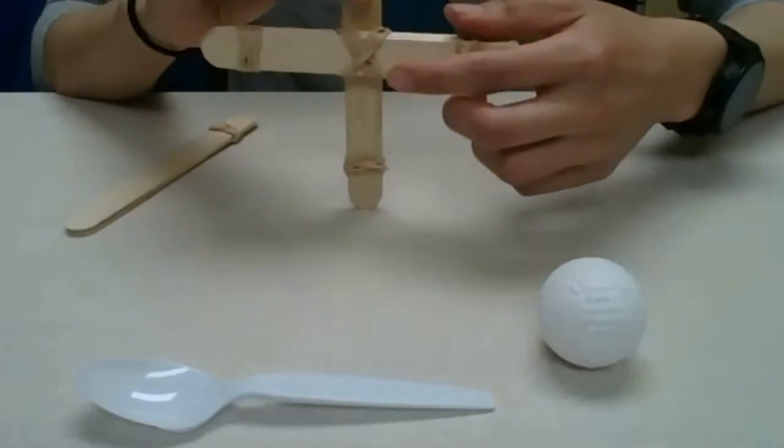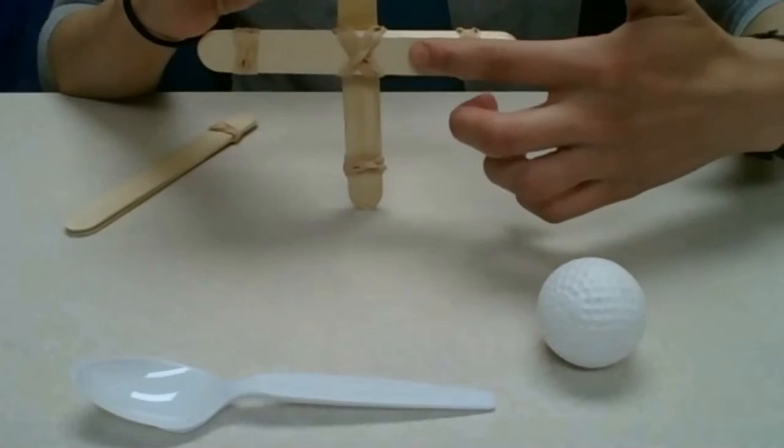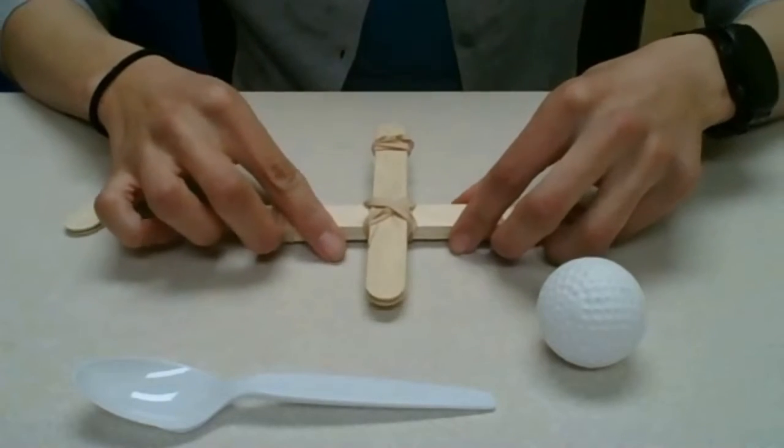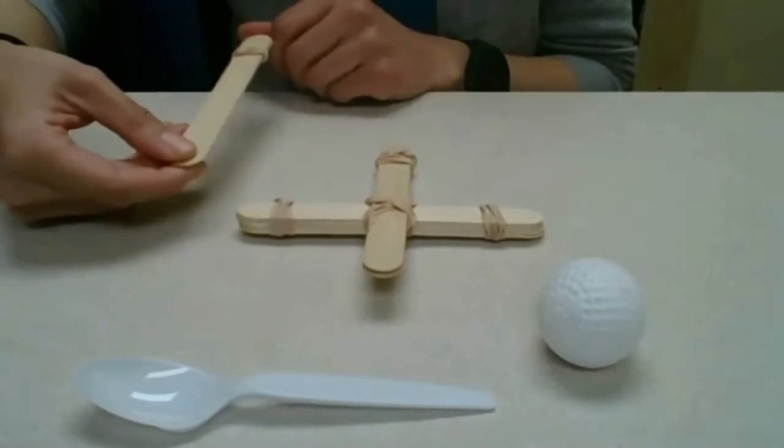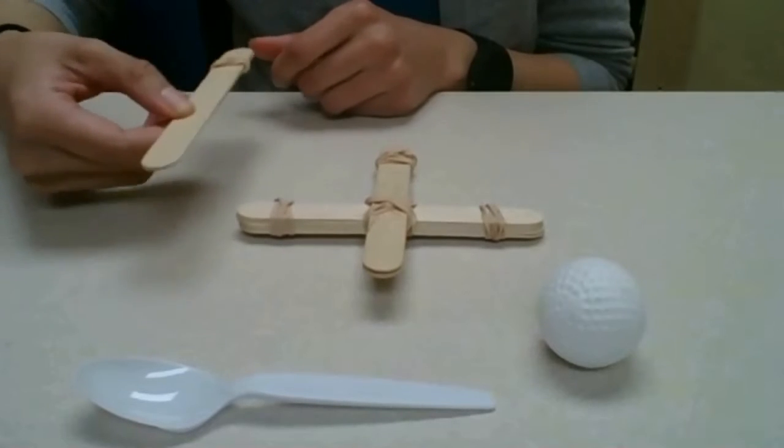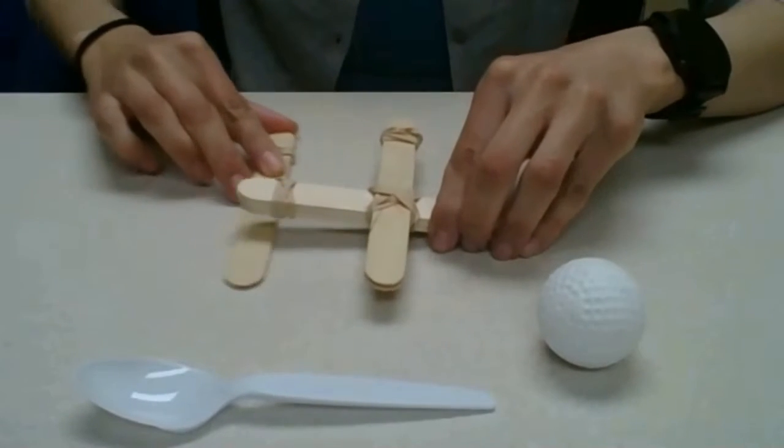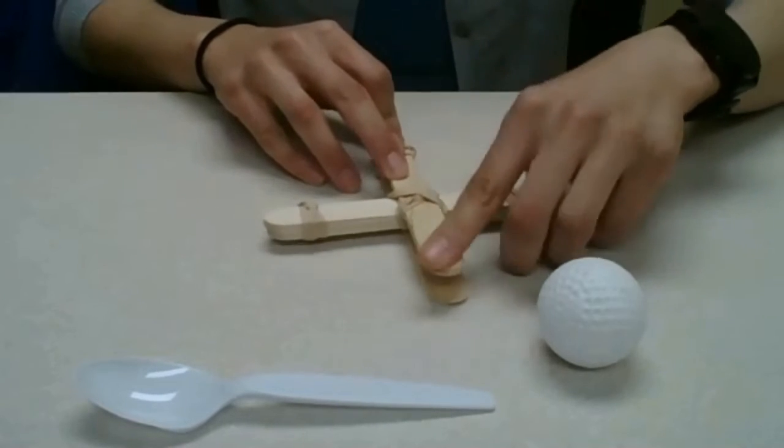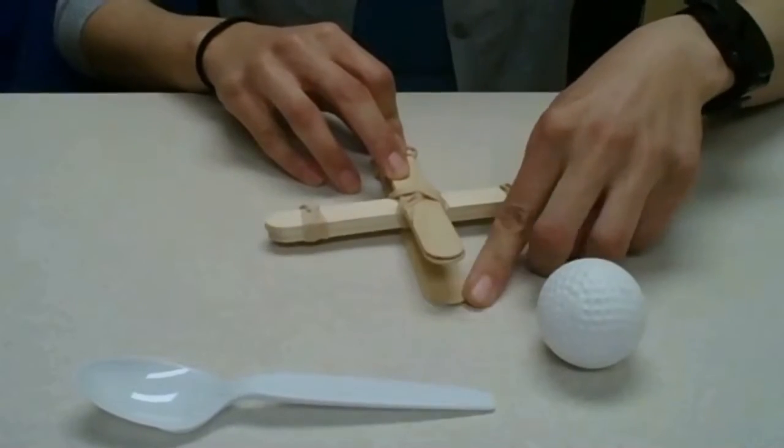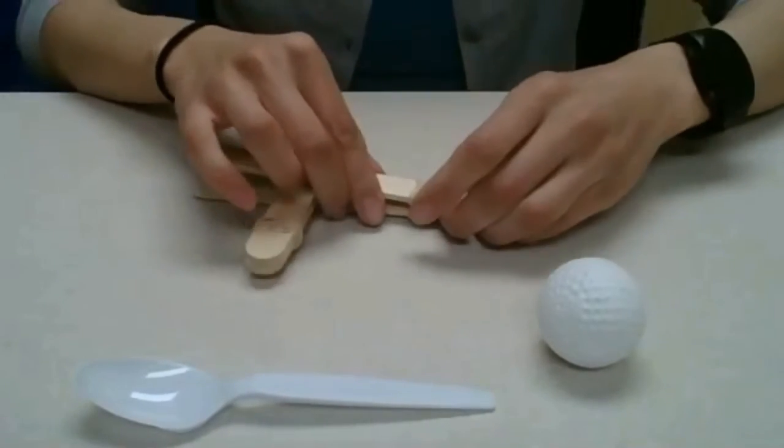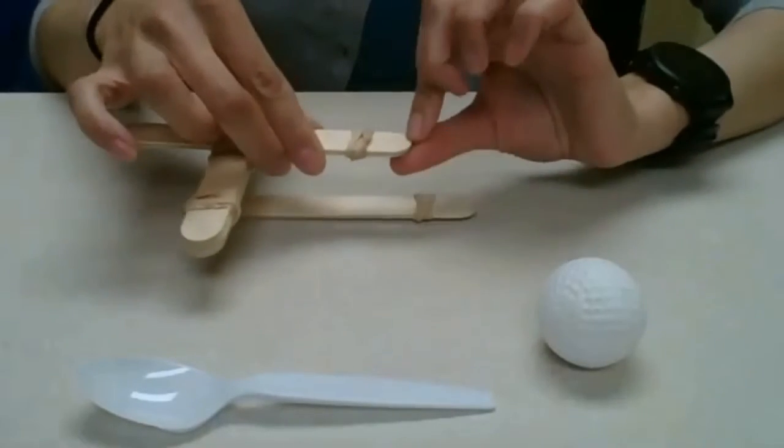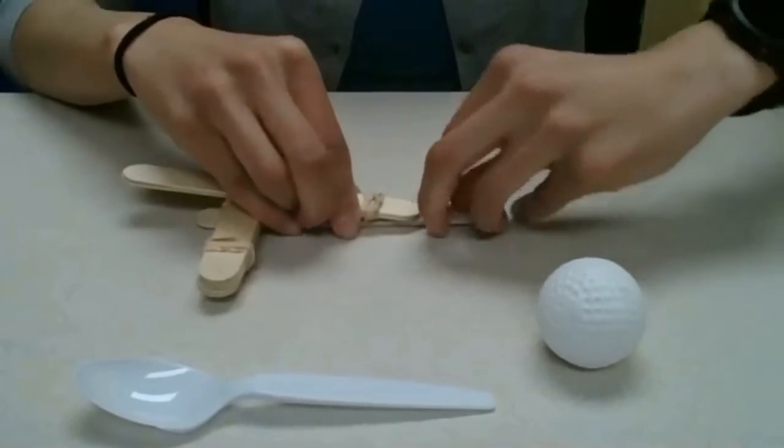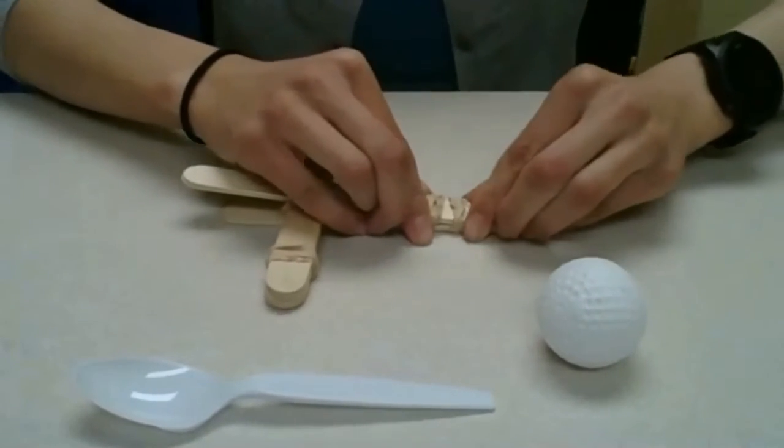So the part that has the stack of five popsicle sticks, what you're going to do is put it down and grab the last two popsicle sticks that we rubber banded together and we're going to slide it underneath. And what we're going to do is grab this part here and we're going to attach it to the rubber band.